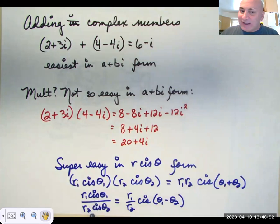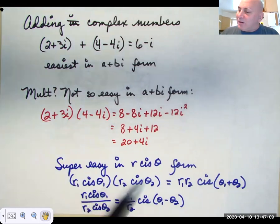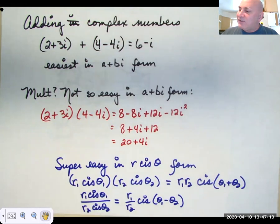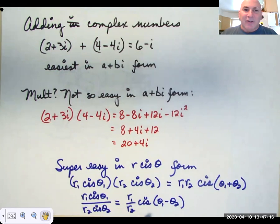If you're dividing complex numbers, that's very difficult in A plus B I form. You have to multiply the numerator and denominator by the complex conjugate of the denominator. Simplify, simplify. In polar form, it's much easier. Divide the R's, subtract the thetas. So to multiply complex numbers, it's easiest in polar form. Multiply the R's, add the thetas. Dividing complex numbers is also easiest in polar slash rectangular or polar slash trig form. You divide the R's, subtract the thetas.